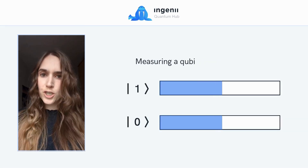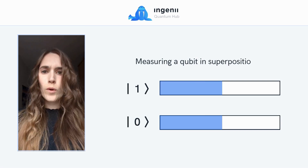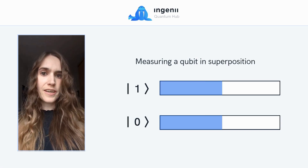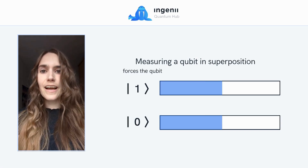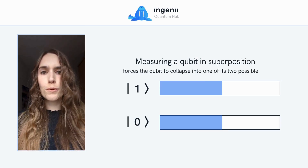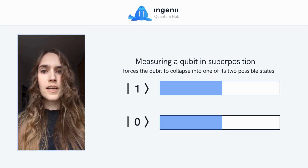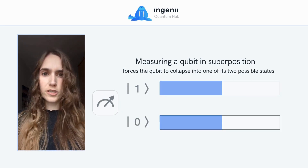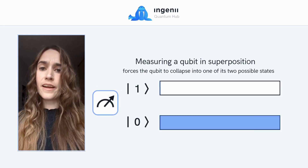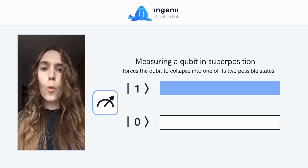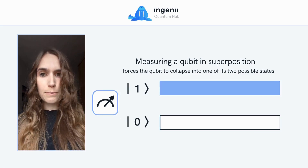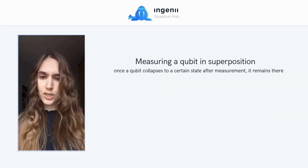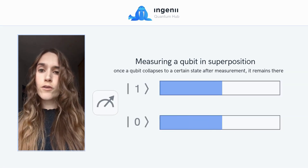However, when we measure a qubit, we don't see this superposition. Instead, the act of measuring forces the qubit to collapse into one of these two possible states, either 0 or 1. Once a qubit collapses to a certain state after a measurement, it stays there.